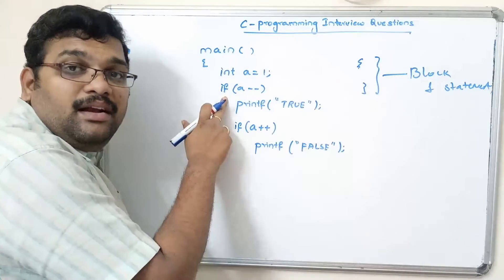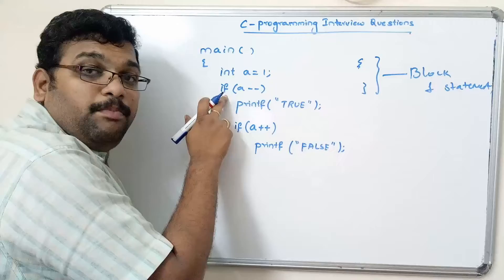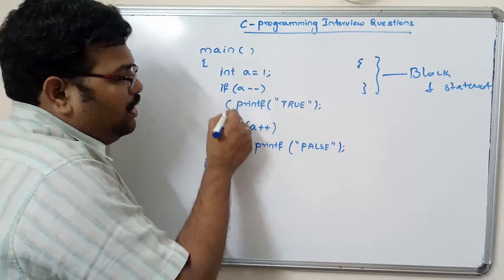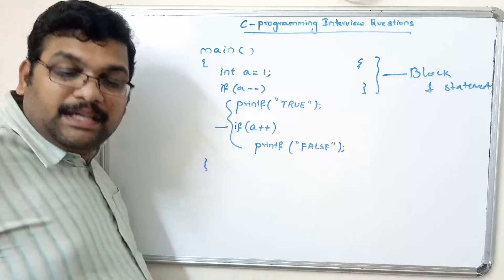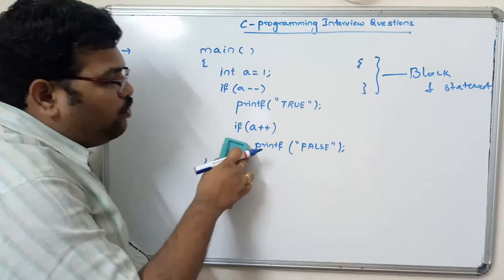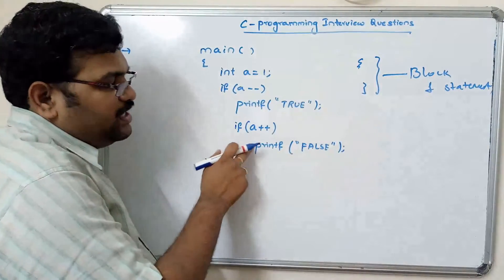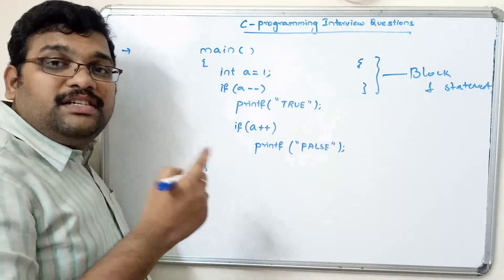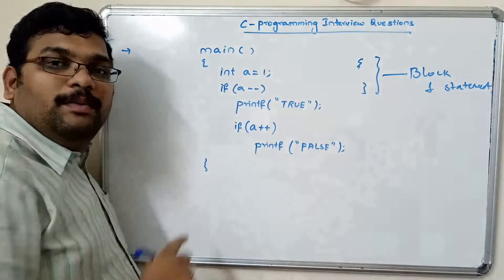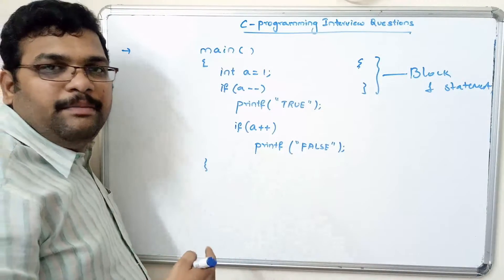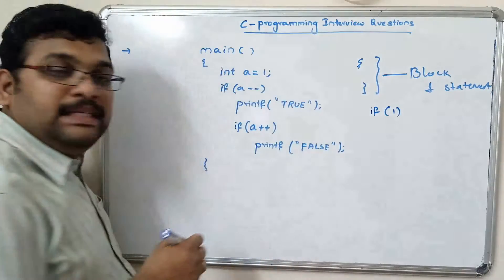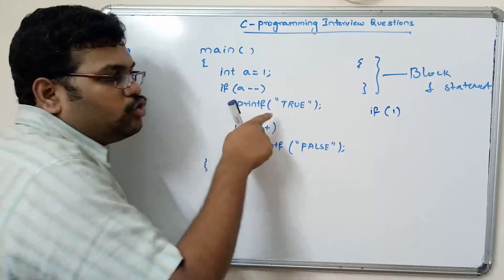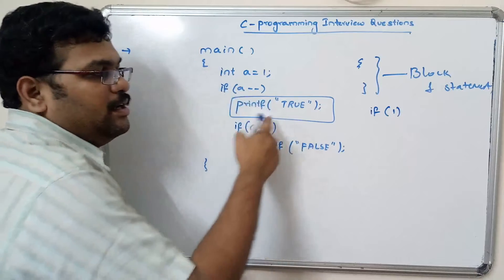Here, if a-- has no curly braces, so only one statement belongs to the true block. Generally we might think all three lines are in the if block, but that's wrong — without curly braces only one statement belongs to the true block. First, a equals 1; a-- is post-decrement, so the old value 1 is assigned to the condition first. If(1) is true, so the true block executes, which consists of only one statement, so 'true' is printed.